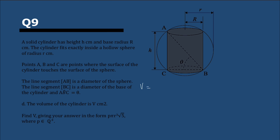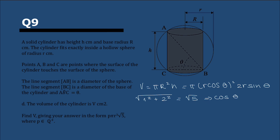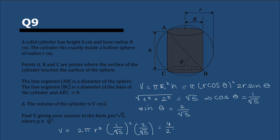For the volume of the cylinder V = πR²h. Substituting R = r cos θ and h = 2r sin θ: V = π(r cos θ)² × 2r sin θ. Since tan θ = 2, the opposite-to-adjacent ratio is 2:1, so hypotenuse = √5, giving cos θ = 1/√5 and sin θ = 2/√5. Substituting these in, we get V = (4/25)πr³√5. Therefore p = 4/25.